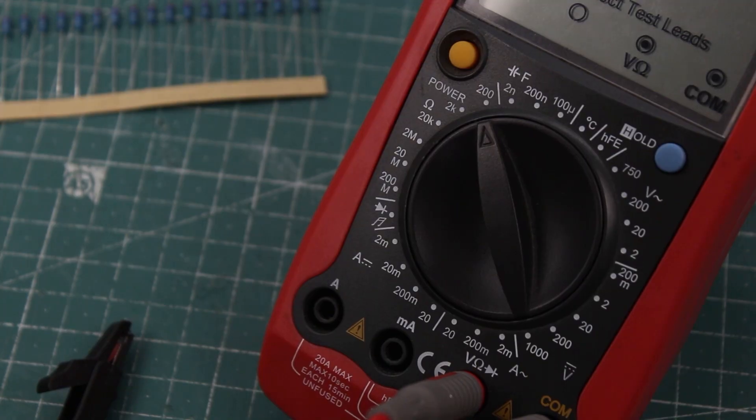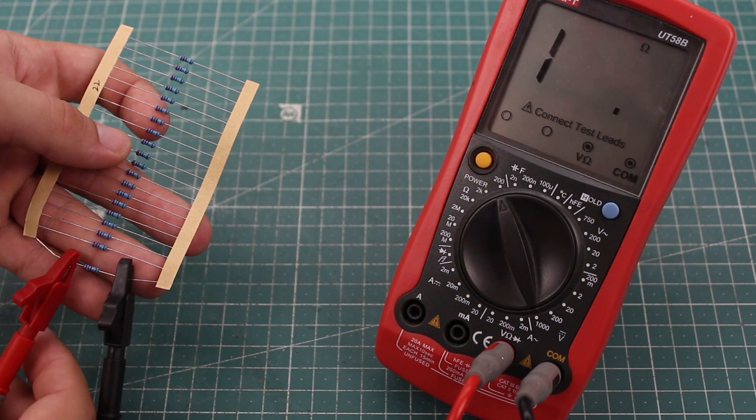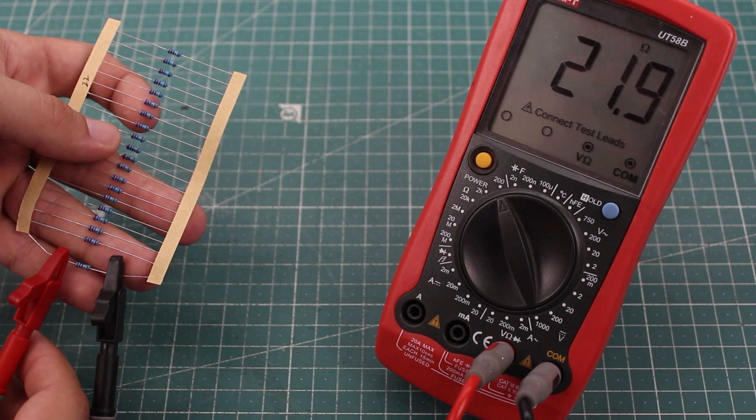The first one is 22 ohms. I can immediately see that the 200 ohm range would be perfect for this situation. So, let's select it and see what the meter says. Around 21.8.